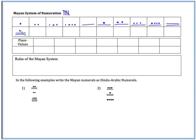So 11 would be 2 bars, 1 dot. 12 would be 2 bars and 2 dots. 13, 2 bars, 3 dots. 14, 2 bars, 4 dots. And what do you think for 15? You guessed it. 3 bars. And it continues on.